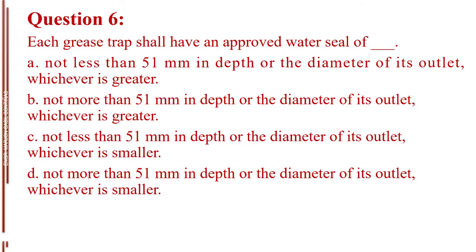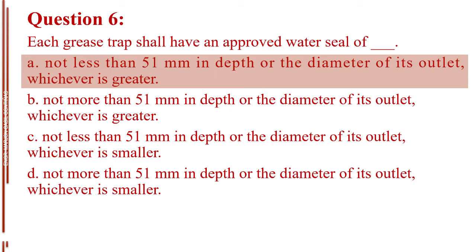Question number 6. Each grease trap shall have an approved water seal of blank. Letter A, not less than 51 mm in depth or the diameter of its outlet, whichever is greater. Letter B, not more than 51 mm in depth or the diameter of its outlet, whichever is greater. Letter C, not less than 51 mm in depth or the diameter of its outlet, whichever is smaller. Letter D, not more than 51 mm in depth or the diameter of its outlet, whichever is smaller. The answer is Letter A, not less than 51 mm in depth or the diameter of its outlet, whichever is greater.